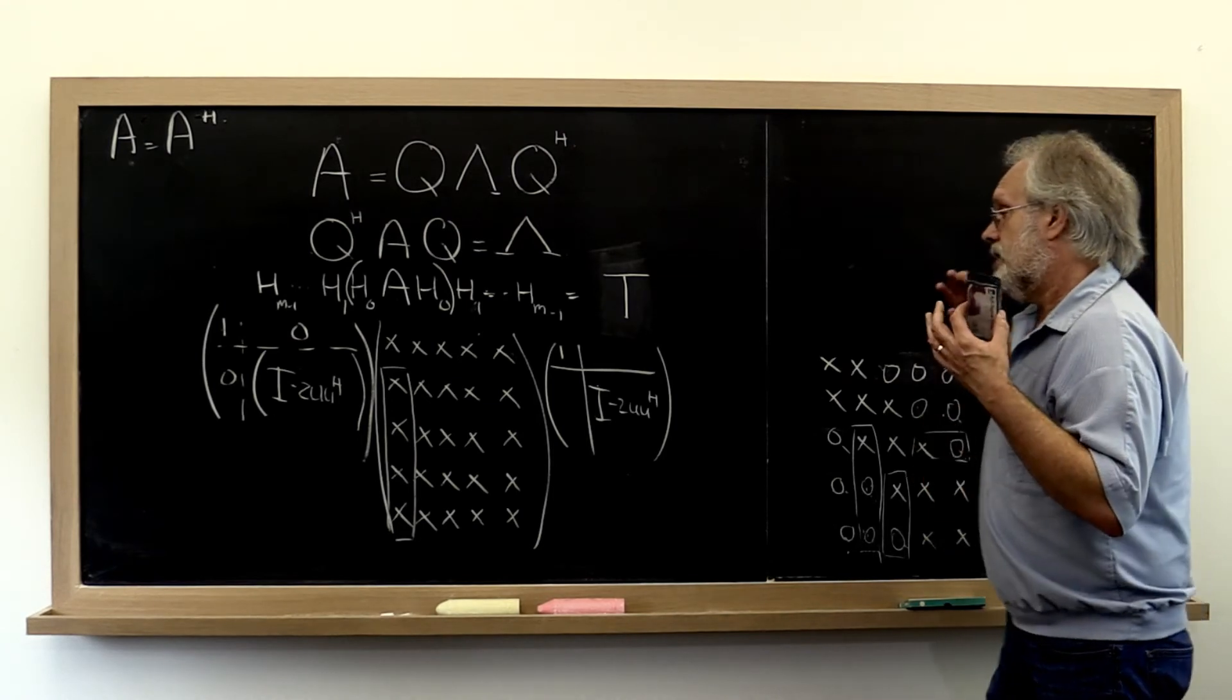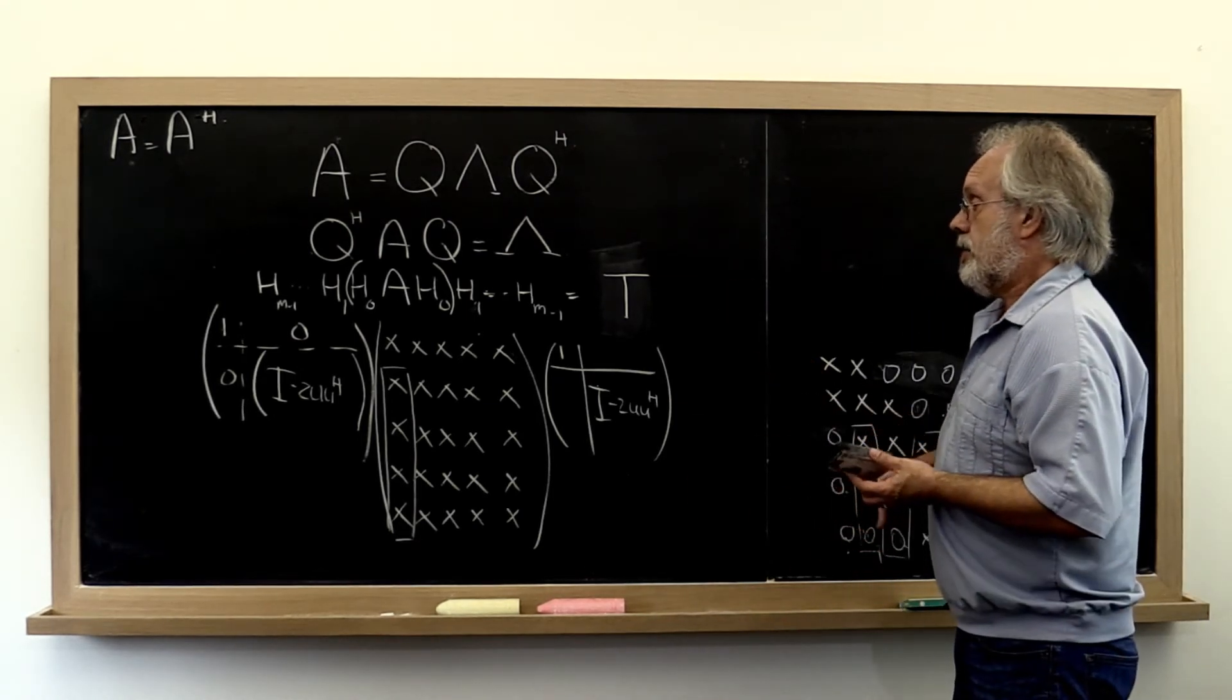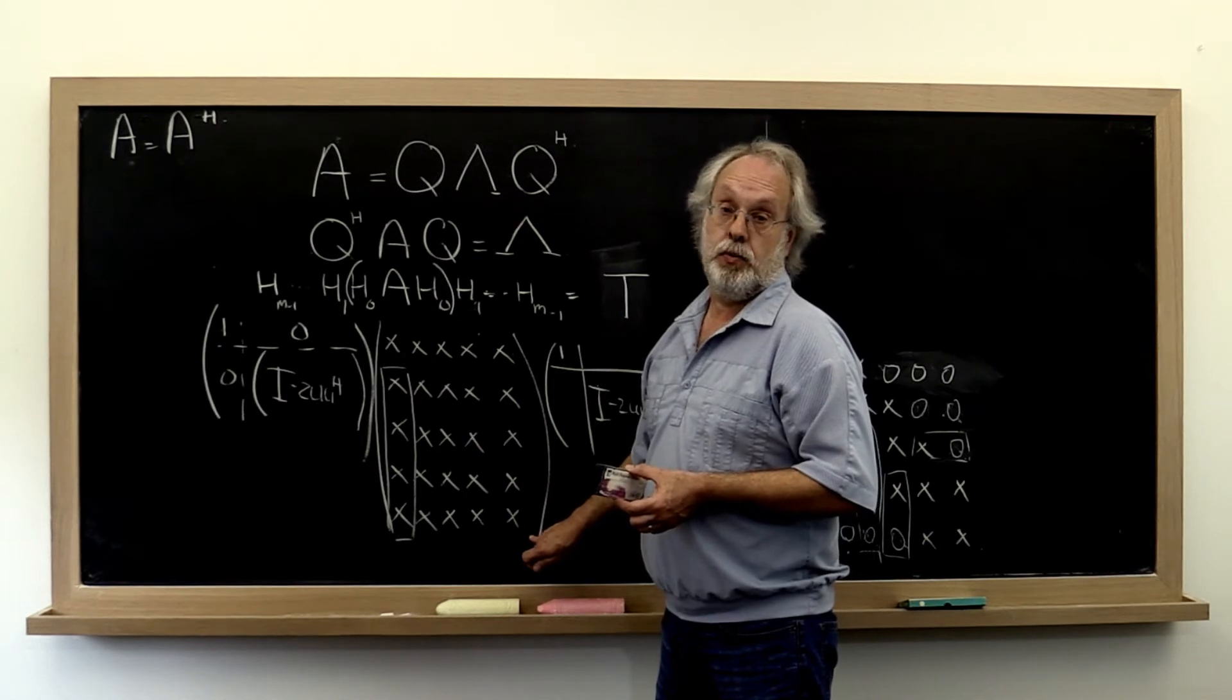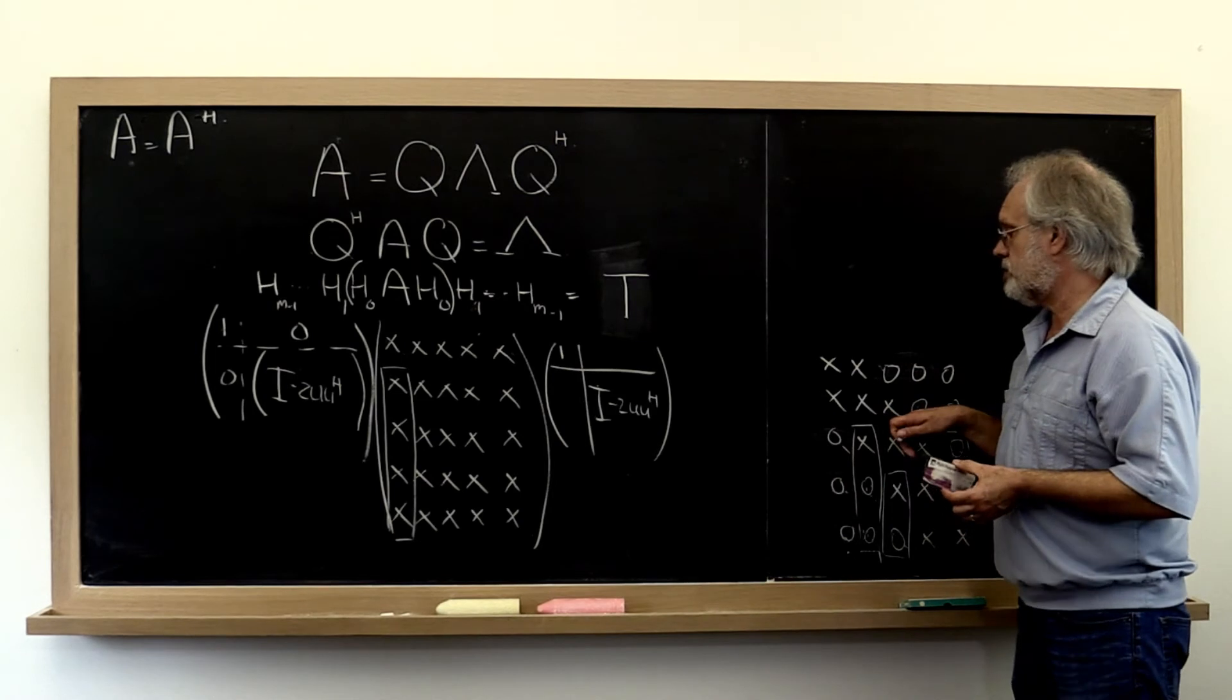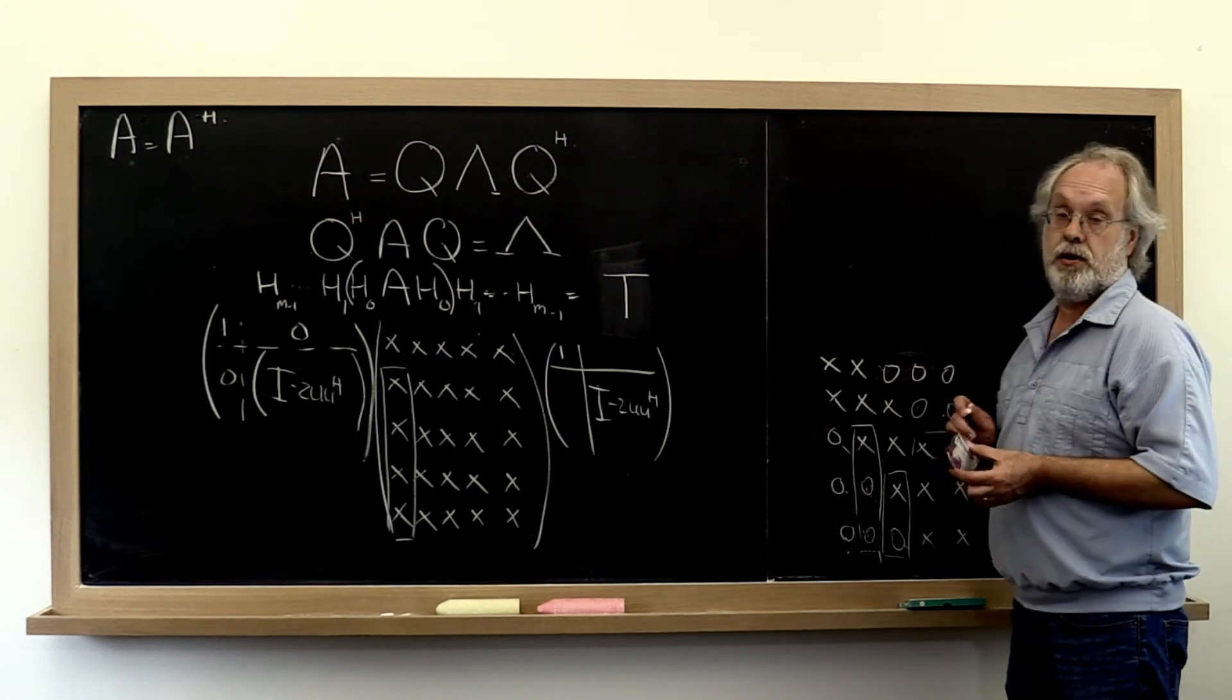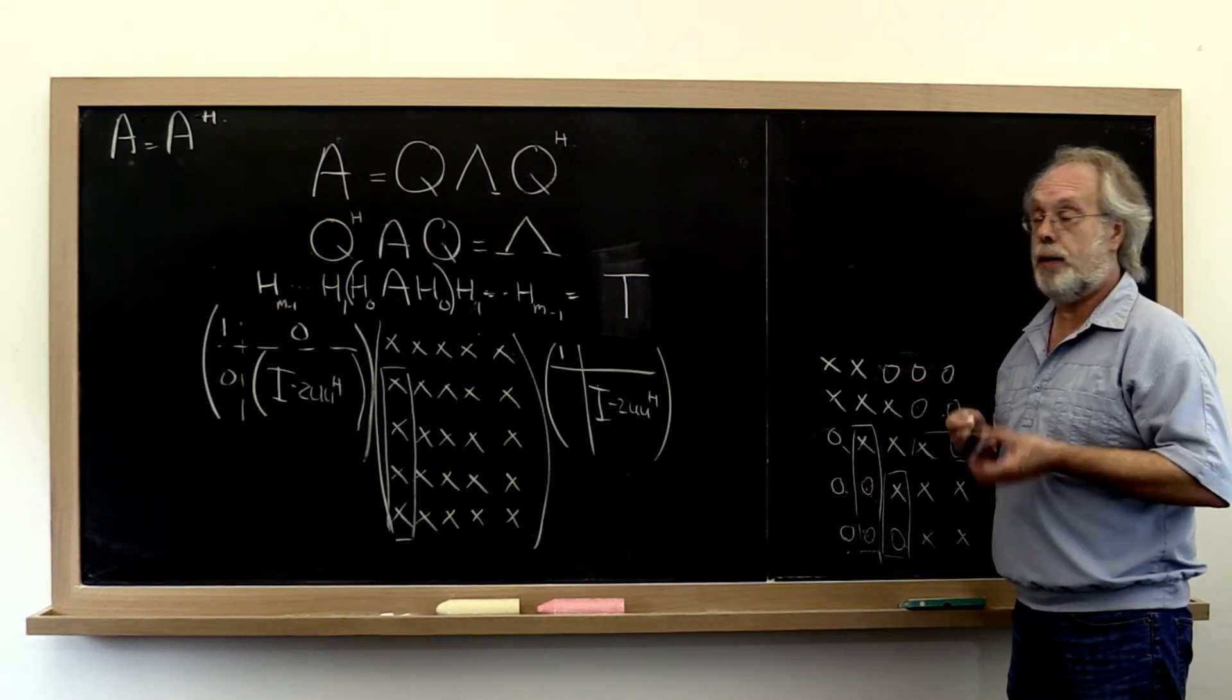Now there are a couple of other insights that are important. One is we know that if A is Hermitian then the diagonal has real values on it. It turns out that there is a post process by which you can actually take any complex numbers that end up on the sub and super diagonal and make those real values as well.